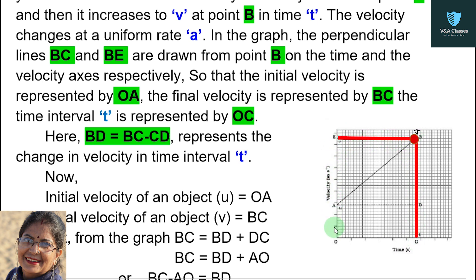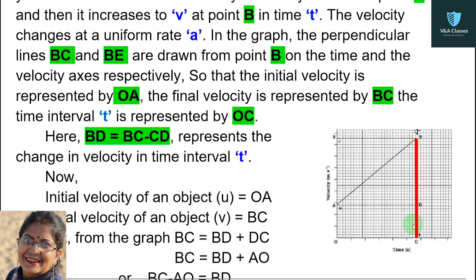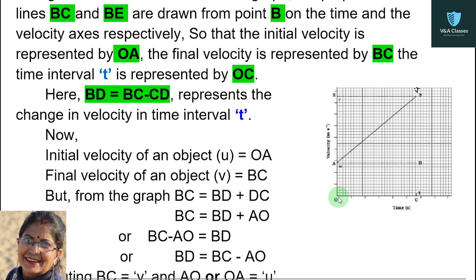In the graph, the perpendicular lines BC and BE are drawn from B on the time and velocity axis respectively. So it is said that from point B, two perpendicular lines are drawn: BC is drawn on the time axis and BE is drawn on the velocity axis. The initial velocity is represented by OA. The final velocity is represented by BC. The time interval T is represented by OC.